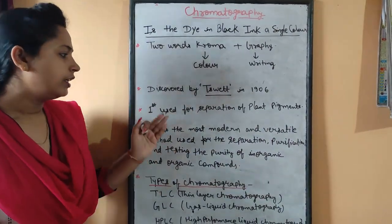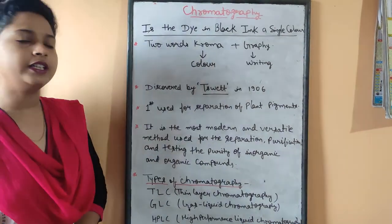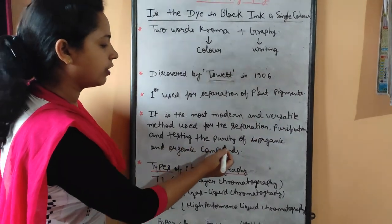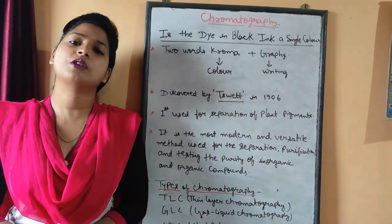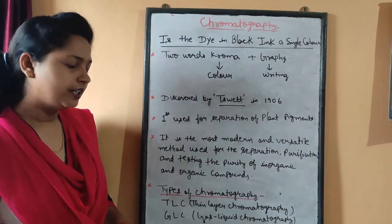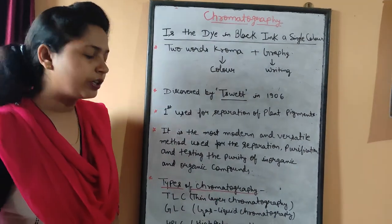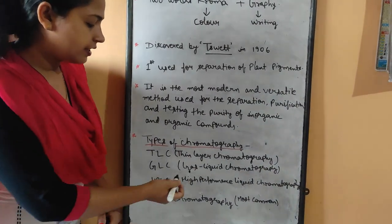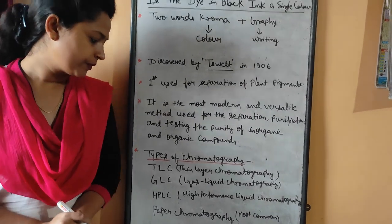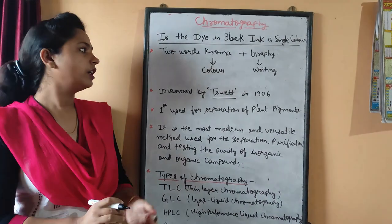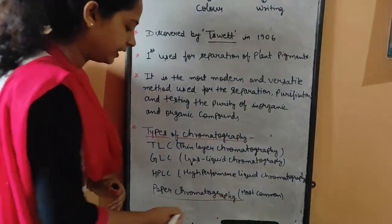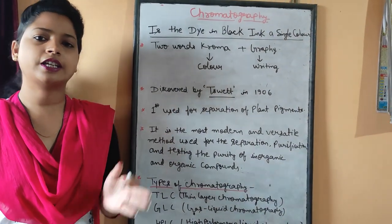This technique is the most modern and versatile method for separation, and it can also be used for the purification and testing of purity of organic and inorganic compounds. There are several types of chromatography: TLC (thin layer chromatography), GLC (gas liquid chromatography), HPLC (high performance liquid chromatography), and paper chromatography, also called column chromatography. In class 9, we focus only on the last method — paper chromatography.